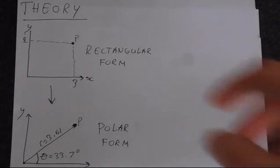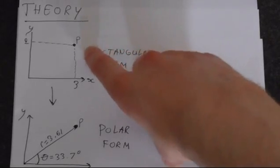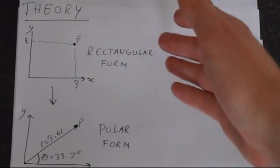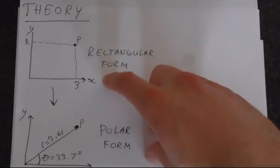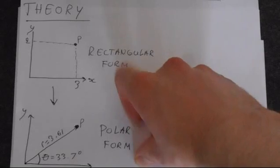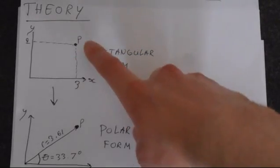We'll just very quickly review the theory. If you've got a number in rectangular form, this means you're specifying the point P by an x and a y coordinate. If this was a complex number, which is the typical application of this function, you would have this as the real axis and this would be the imaginary axis, and this complex number here would be 3 plus 2i.